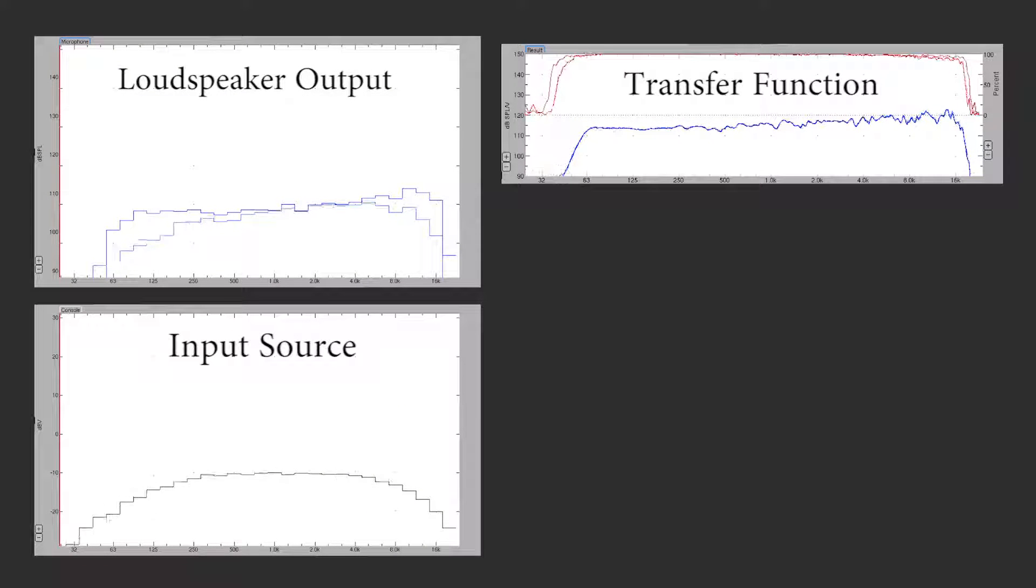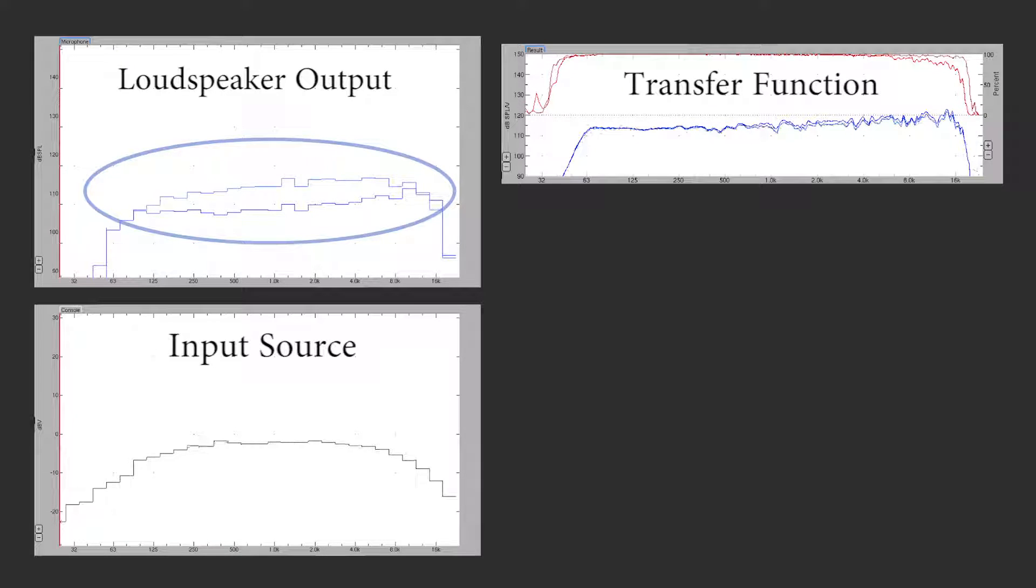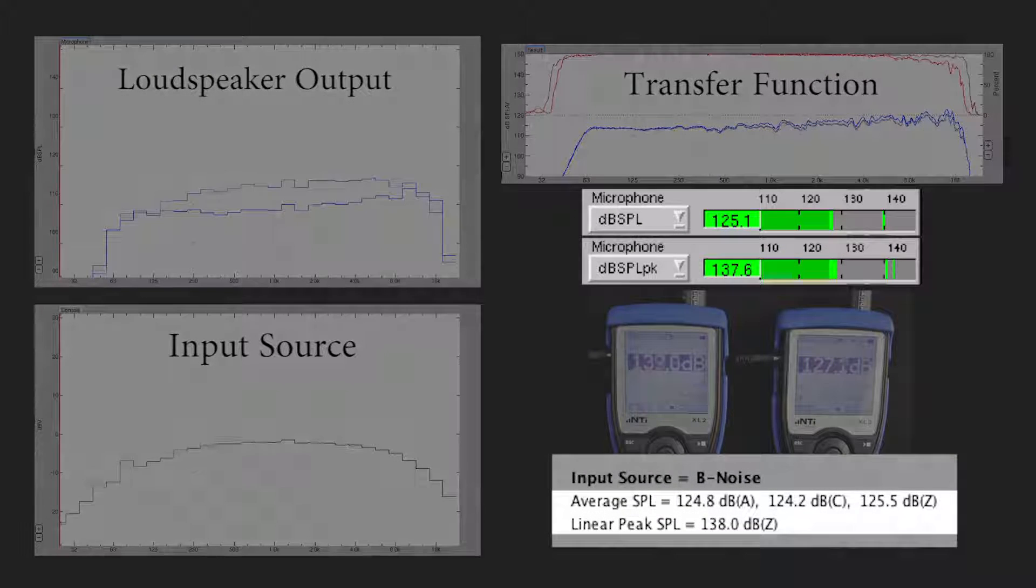Again, the input is increased until limiting is reached across at least two octaves as observed in the transfer function shifting downward. With this loudspeaker, the maximum output level is higher with B noise than with pink noise, and the B noise SPL values closely match those from MAP.